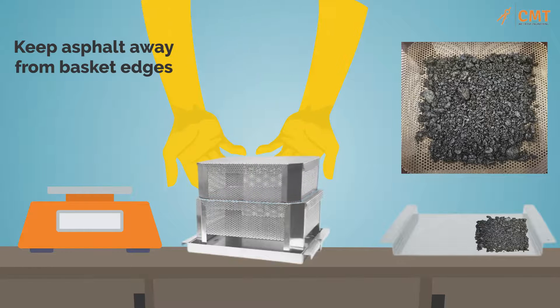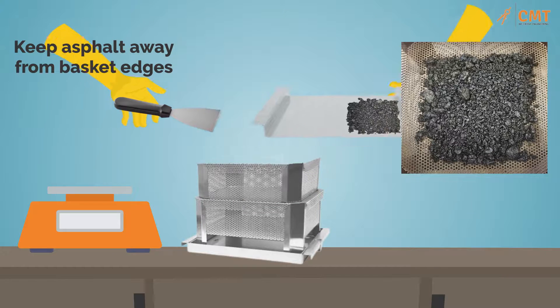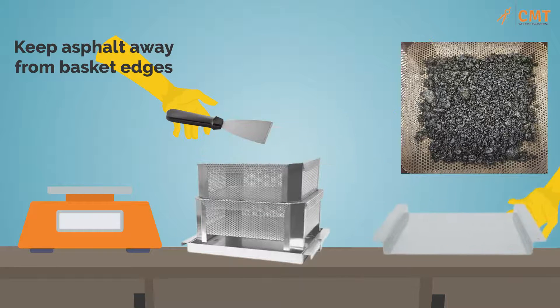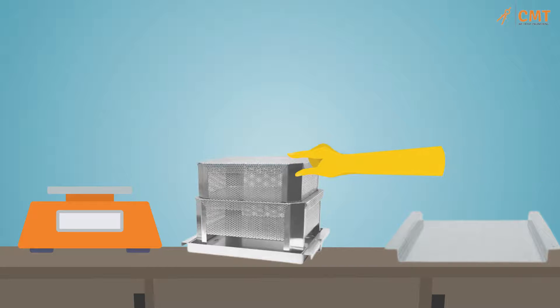Replace the top basket and remove the lid. Place the remaining half of the sample in the top basket. Make sure to evenly distribute the sample and move the mix away from the basket edges. Complete the basket assembly by securing the lid and assembly guard.